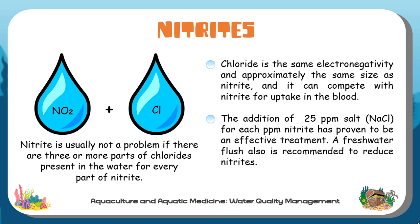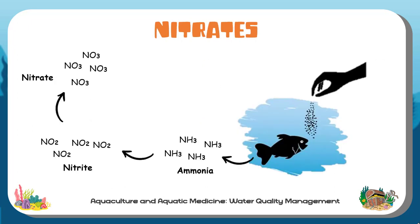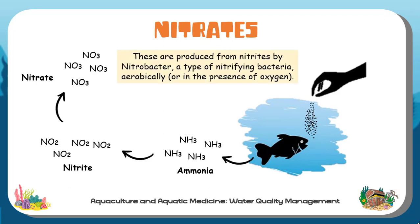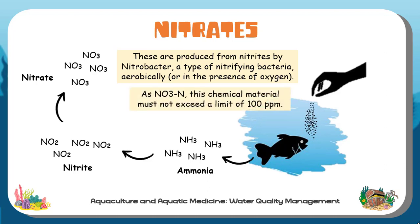Lastly, we will discuss nitrate. It is the most frequent form of totally oxidized nitrogen. Nitrates are produced from nitrites by Nitrobacter, a type of nitrifying bacteria, aerobically or in the presence of oxygen. This chemical must not exceed a limit of 100 ppm.